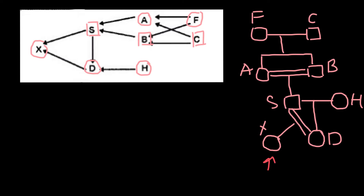In our calculations, the first step is to find the proband, which is individual X. The next step is to find the parents of individual X, which are individuals S and D. Then we ask: do parents S and D have common ancestors? Essentially all these individuals in the pedigree would be common ancestors of S and D.